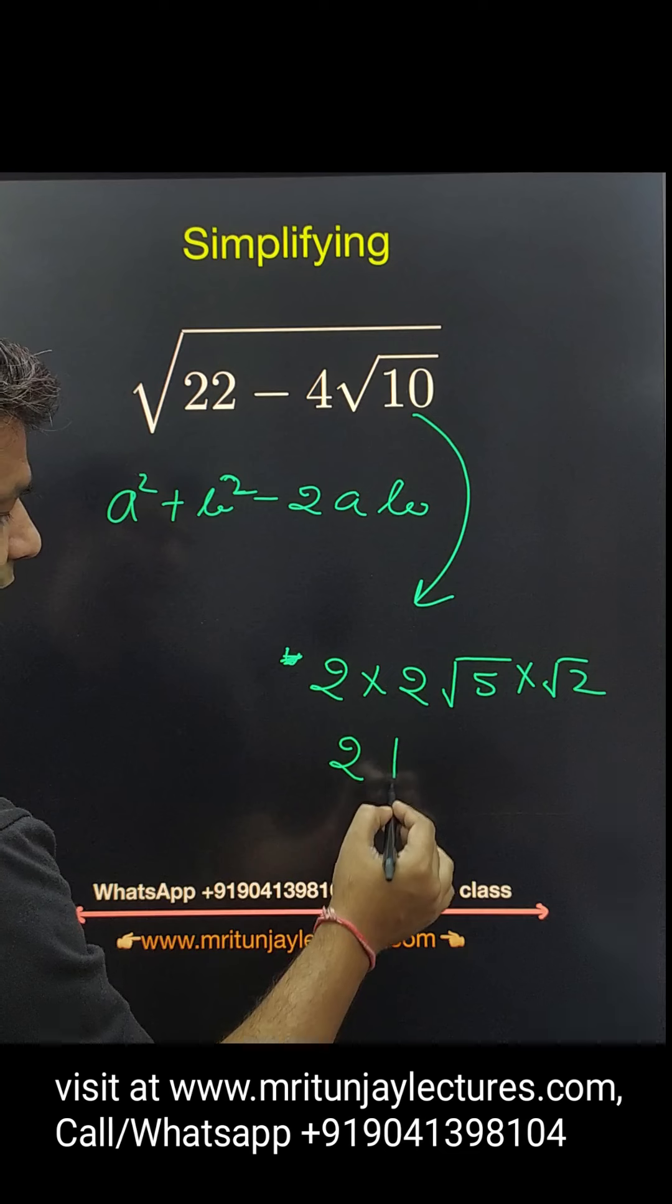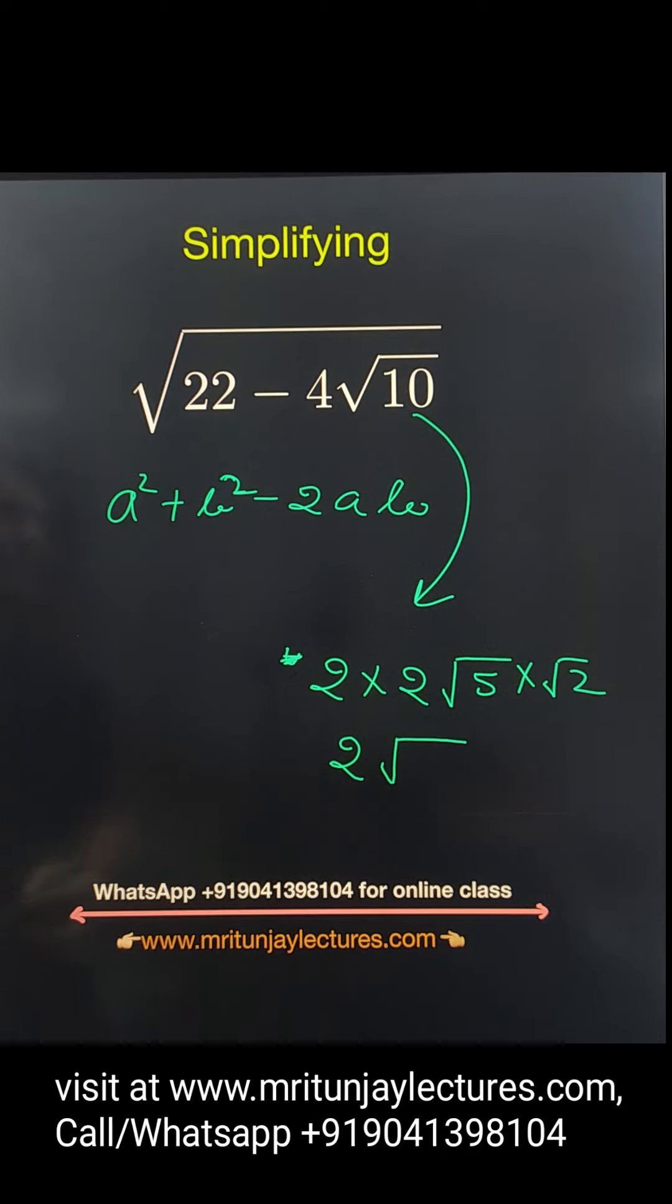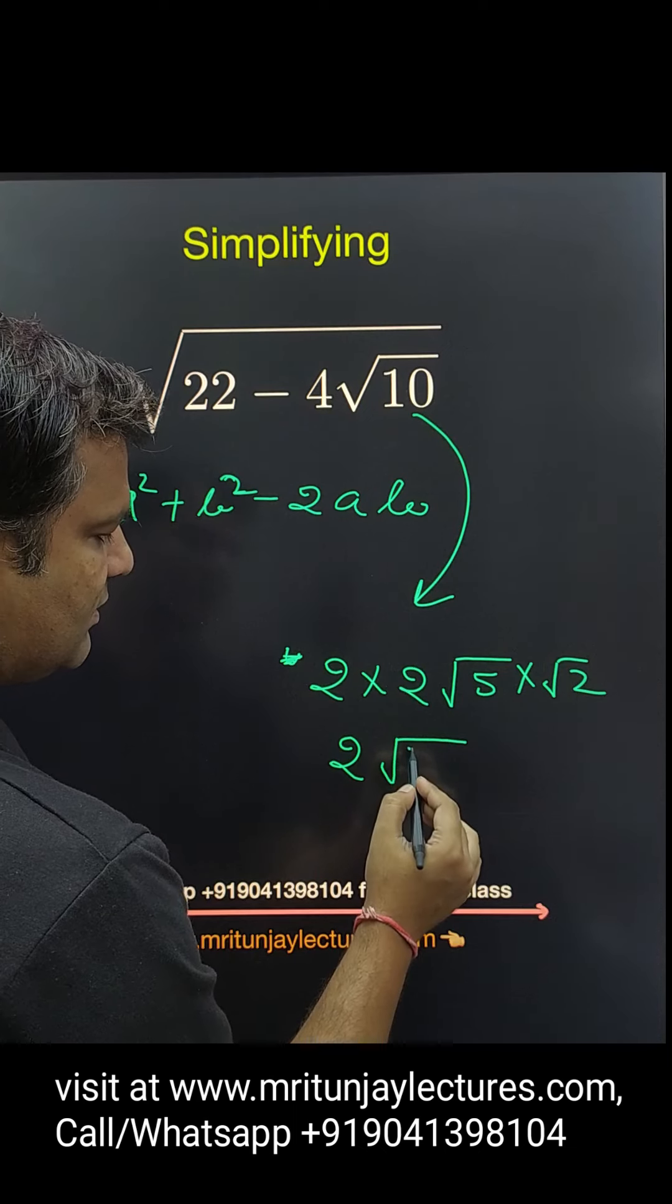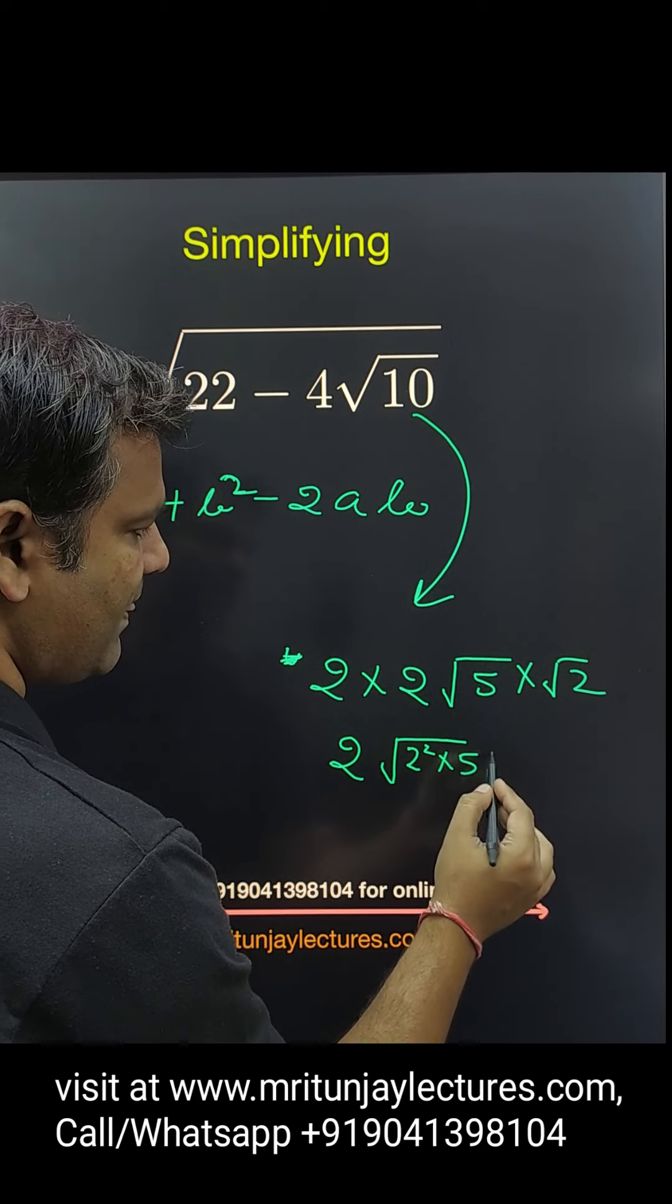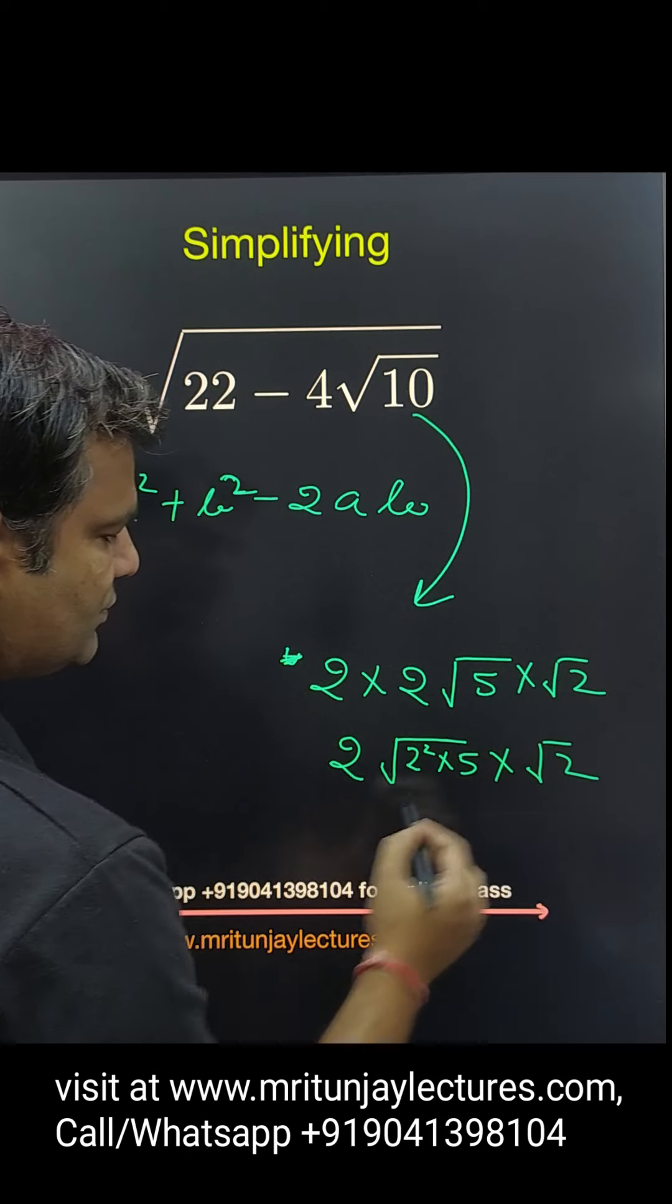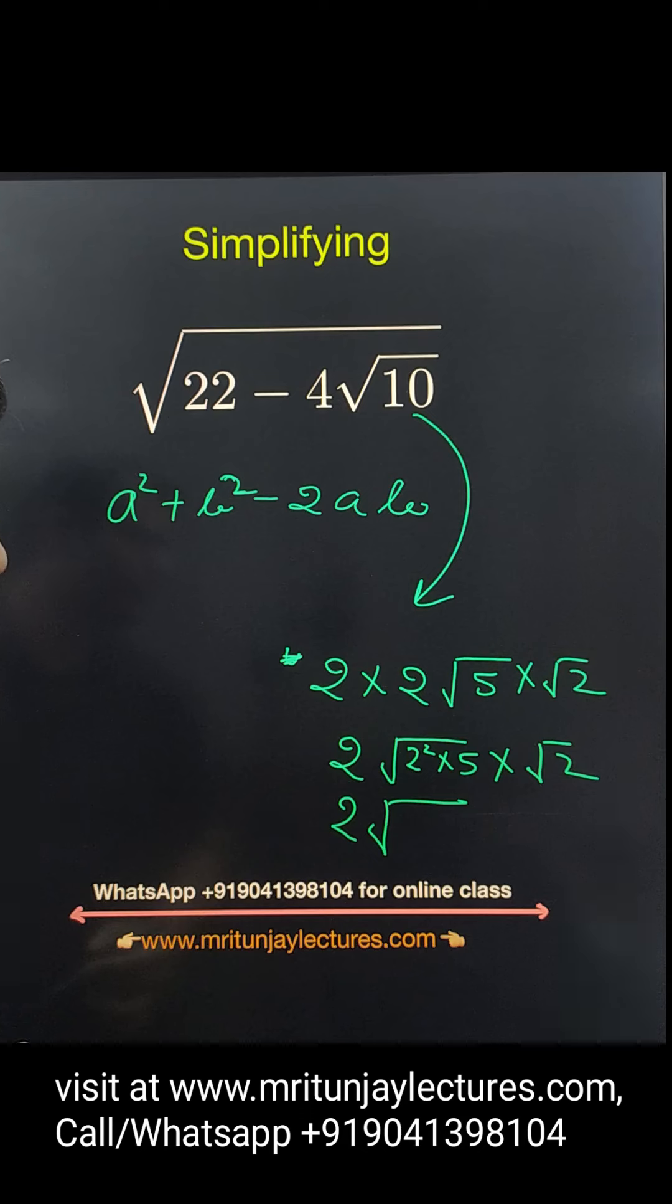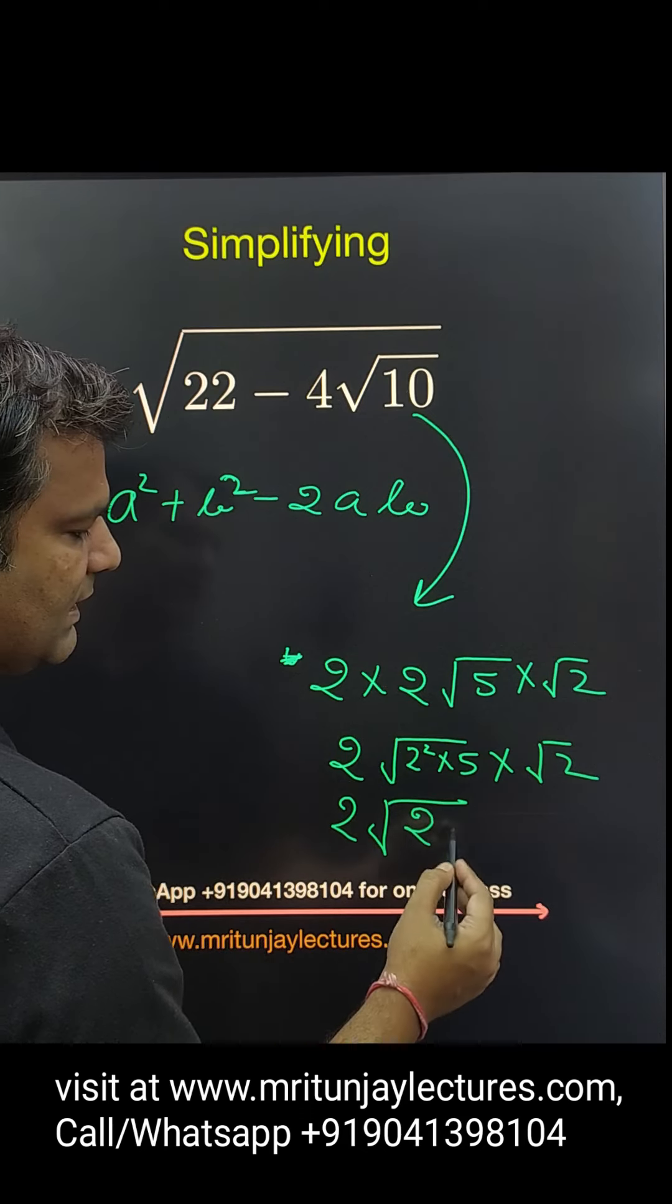So basically here 2 into that one, if that is going under root, so 2 square into 5 and the root 2. So that is 2 to the 4, 4 into 5 is 20, and here root 2.